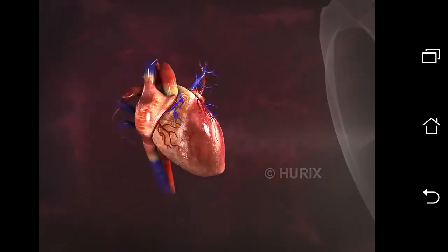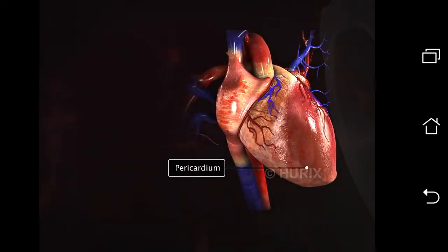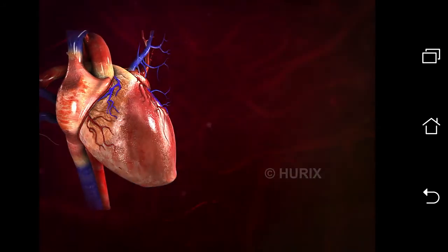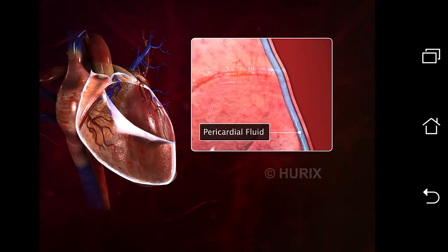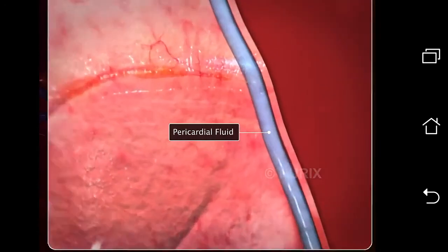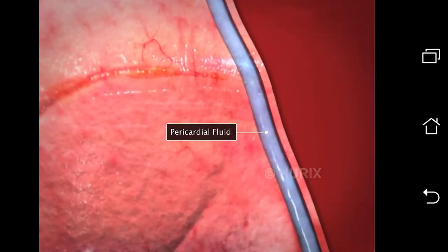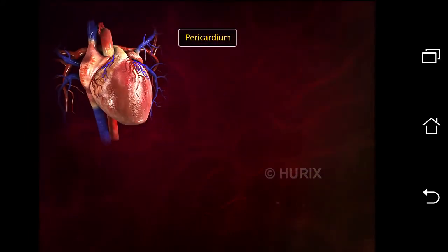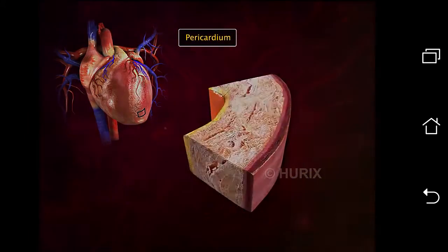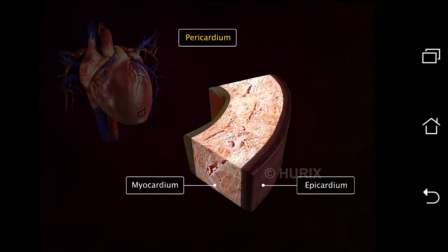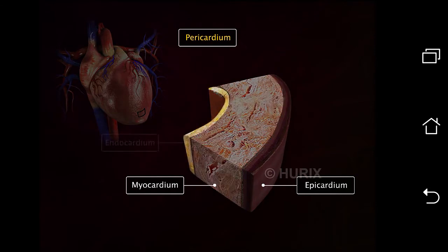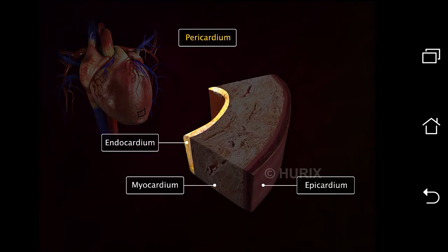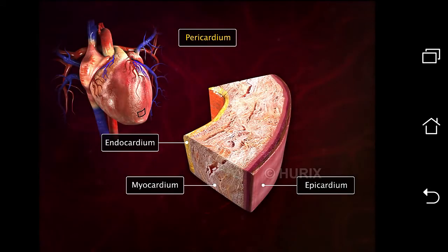The outermost covering of the heart is the pericardium. The pericardium is a double-walled membrane, and the pericardial fluid flows between the two walls. The pericardium is followed by the epicardium, myocardium, and endocardium. Together, they constitute the wall of the heart.